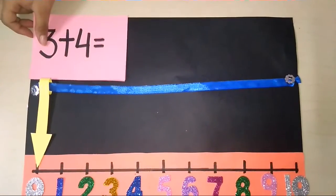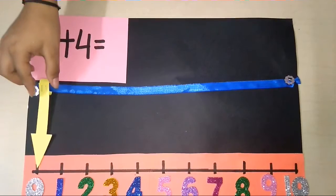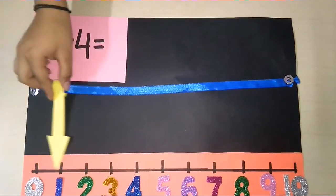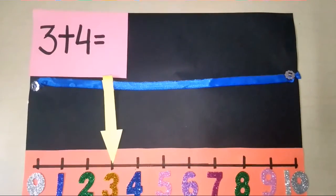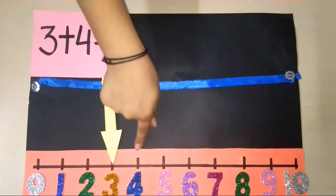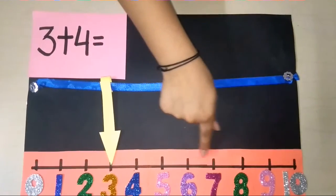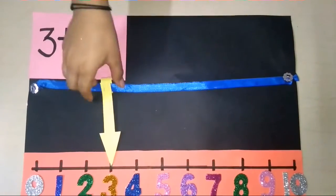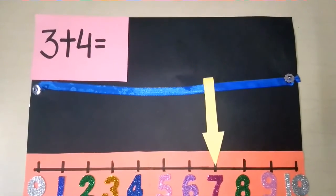First we will add 3 plus 4. We will bring our arrow at 3 and add 4 to it. So 1, 2, 3 and 4. The answer came 7.